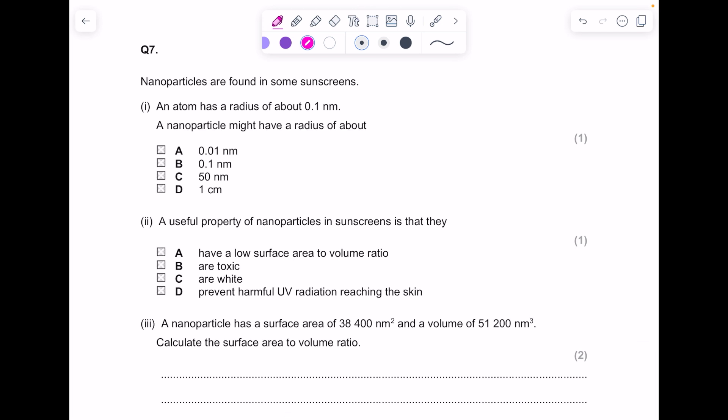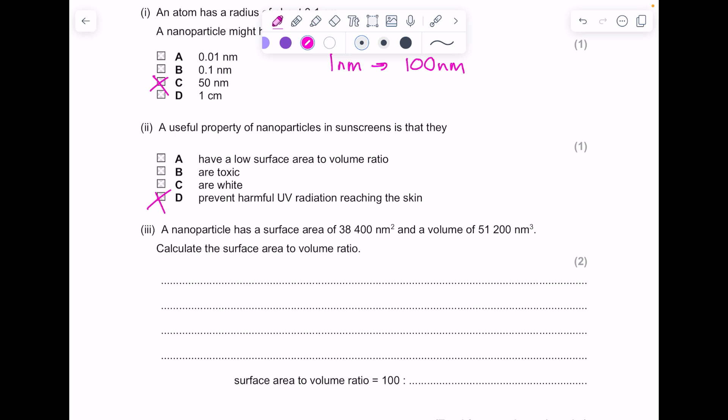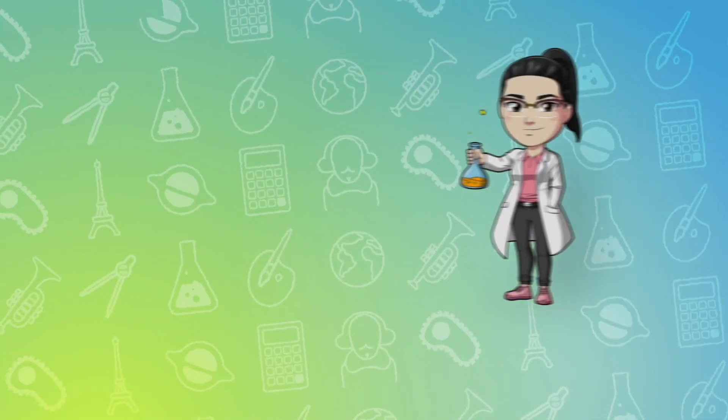Nanoparticles are found in some sunscreens. An atom has a radius of around 0.1 nanometers, and a nanoparticle might have a radius of, so I said between 1 to 100 nanometers, so that's why C is the answer. The useful property of nanoparticles in sunscreens is that they have the ability to prevent harmful UV radiation reaching the skin. A nanoparticle has a surface area of this and a volume of this. Calculate the surface area to volume ratio. We do 38,400. You need to make one of those numbers equal one, so you need to divide both numbers by the smallest number, which is 38,400, so we get an answer of 1.3 recurring.